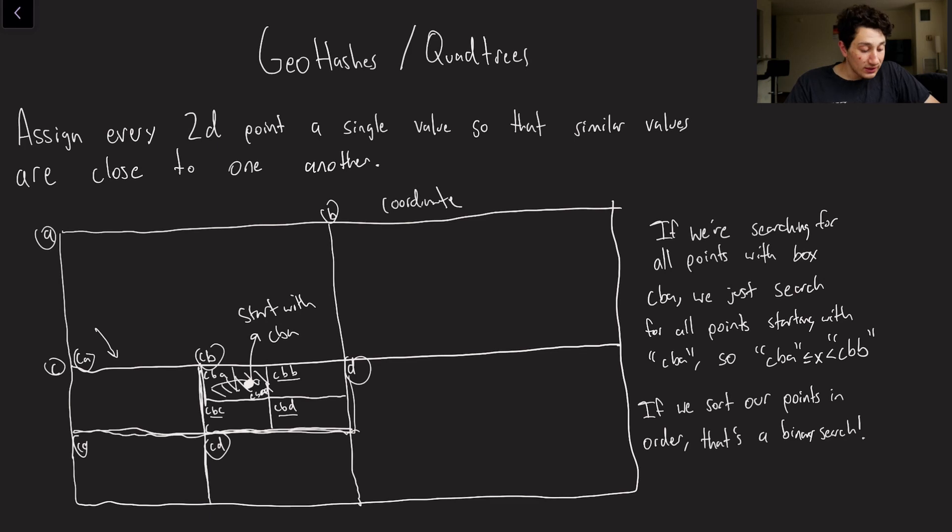And so that's super important to us because it means that if we want to find all of the points that are within a certain box, all we have to do is search for all of the points that have that prefix. And if our points are ordered in our database, that basically means that we're searching for all the points where the string name is between CBA and CBB because we can lexicographically sort them. And of course, like a normal database index, if all of our points are sorted by the geohash, then that's just a binary search, and I'll show a more concrete example of this in a second.